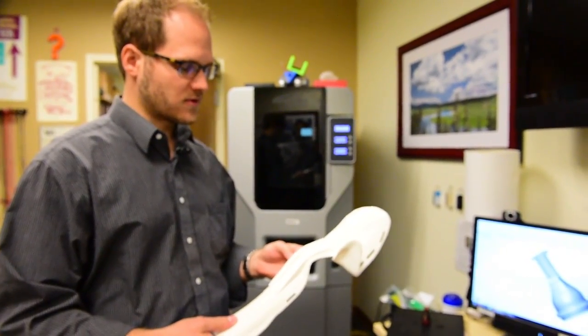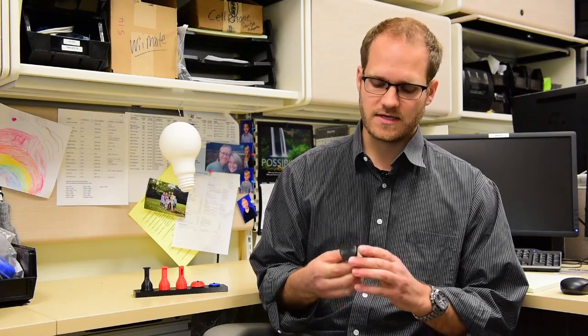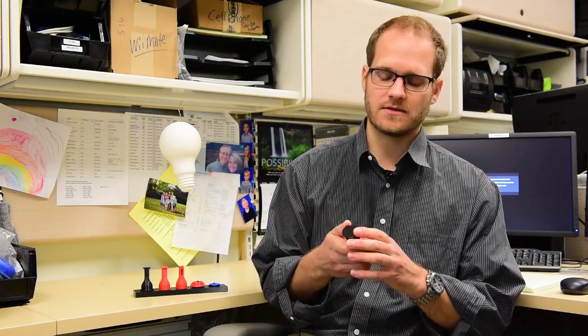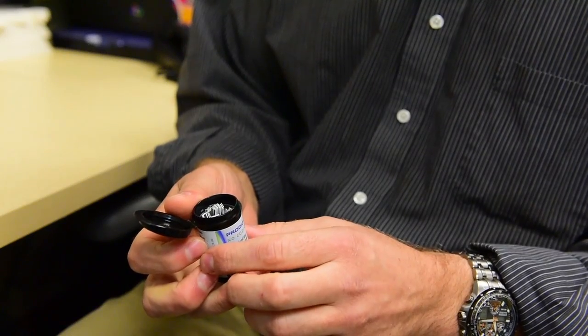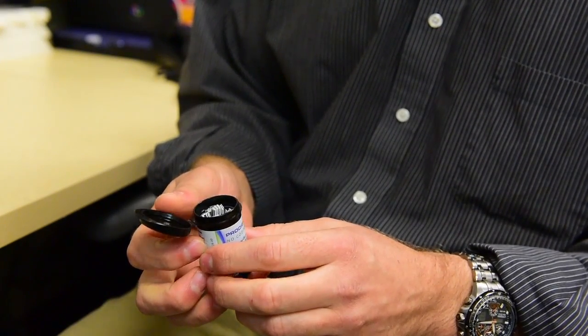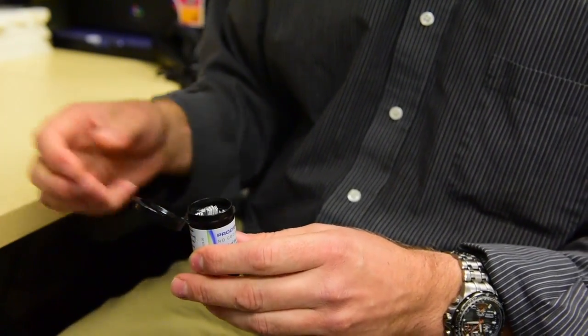He wanted to be able to independently check his blood glucose. That involves opening these little canisters, which are like old film canisters, and there's a bunch of strips in there that you really just have to dump out. If you're using one hand, you end up dumping out a bunch onto a table.